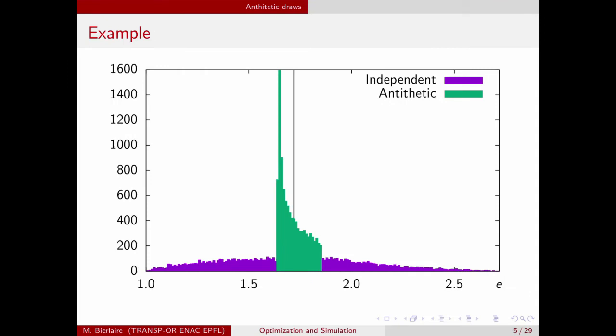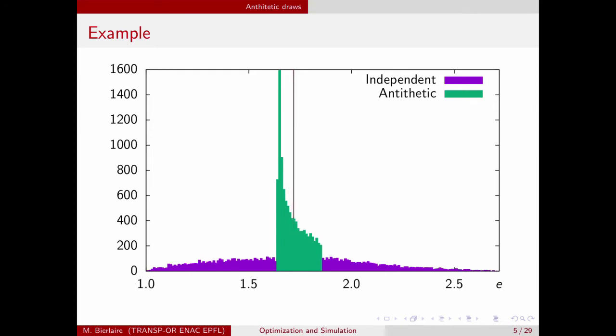Here is a picture of the draws. The independent draws are spread across the interval [1, e], since I draw from (0,1) and take the exponential, giving a quantity between 1 and e. While the antithetic draws are much more concentrated around the true value, represented by the vertical line — a pictorial representation of the significant decrease in variance.